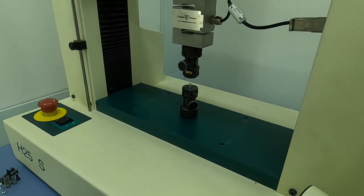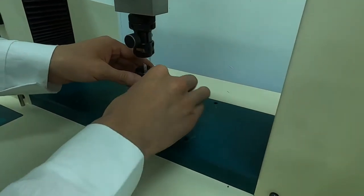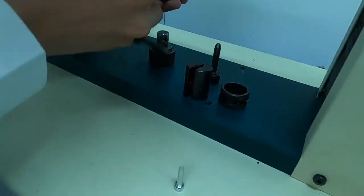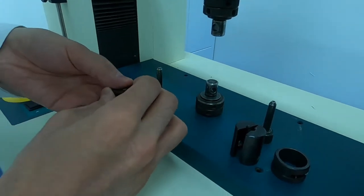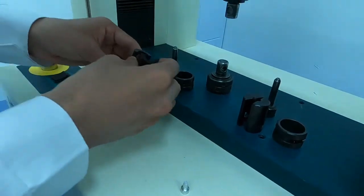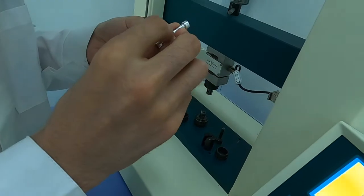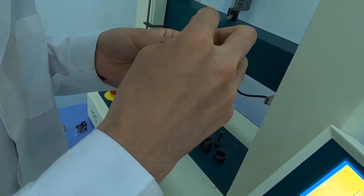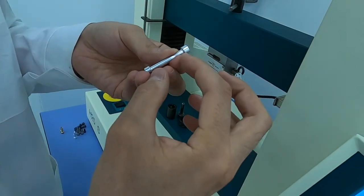After the fracture, we have to take the specimen. This is the first piece, and our second piece is over here. In this case, we have to take measurements of the diameter of the fracture and the gauge length.